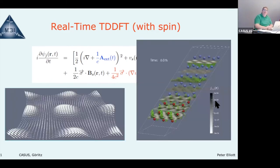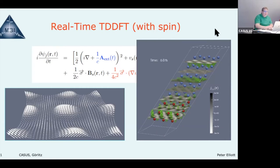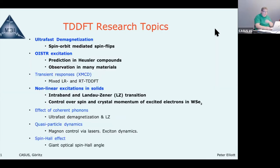We calculate expectation values of our orbitals. For example, this is the magnetization density for a chromium monolayer after hitting it with a laser — it goes crazy. We can also compute the current density; here for nickel on top of aluminum layers, you can see the current flow into the other layers after the laser pulse. I'm going to talk about ultrafast magnetization and the phenomenon we call OSTT, but we also do transient XMCD, phonon effects, magnons, and the spin Hall effect.